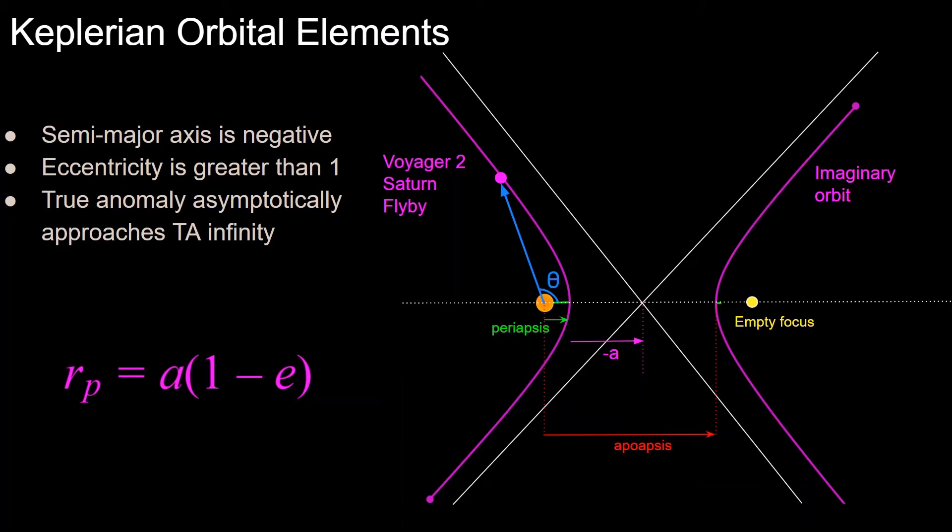But we can still relate periapsis, semi-major axis, and eccentricity using this equation right here, which applies to any type of orbit. In this case, eccentricity is greater than 1, which means that this expression will be negative, so 1 minus 2 will be negative 1, but semi-major axis is defined as a negative value for hyperbolic trajectories, so the periapsis here in this equation will still turn out to be a positive value.